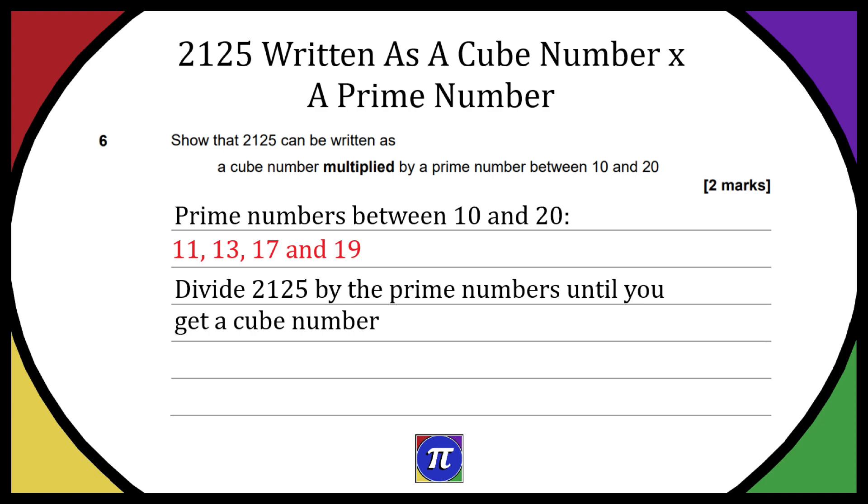So just use your calculator, divide 2125 by the prime numbers until you get a cube number.